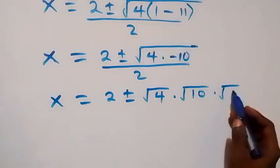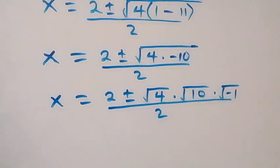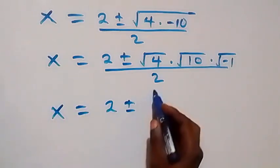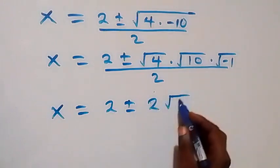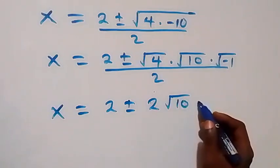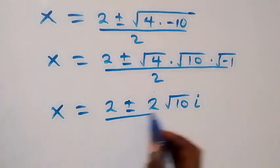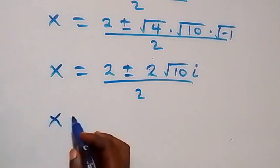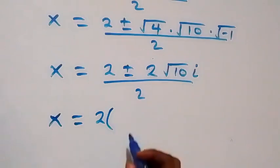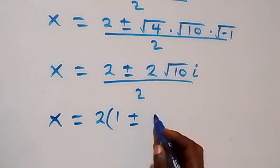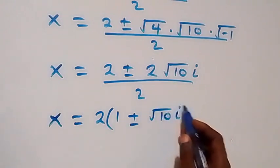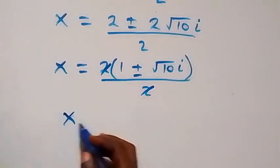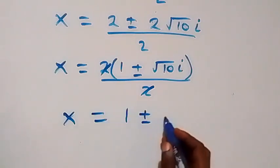That gives us x equals to 2 plus or minus — taking the square root of 4 as 2, and root of negative 10 gives root 10 times root of minus 1 — over 2. Since 2 is common, x equals to 2 into bracket 1 plus or minus root 10 i, over 2, and the 2s cancel.